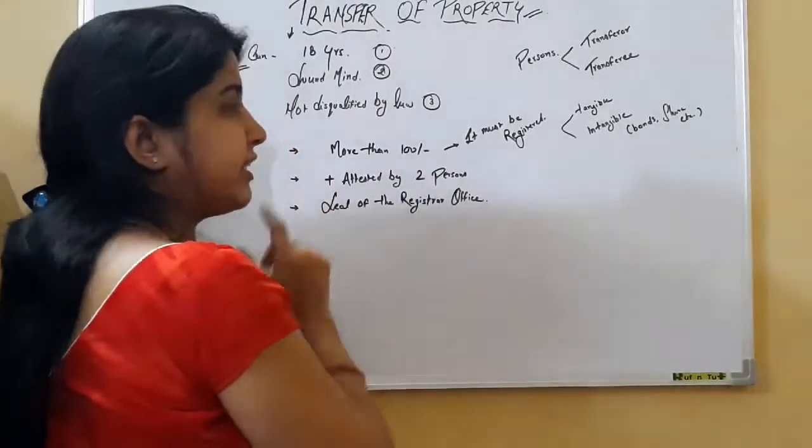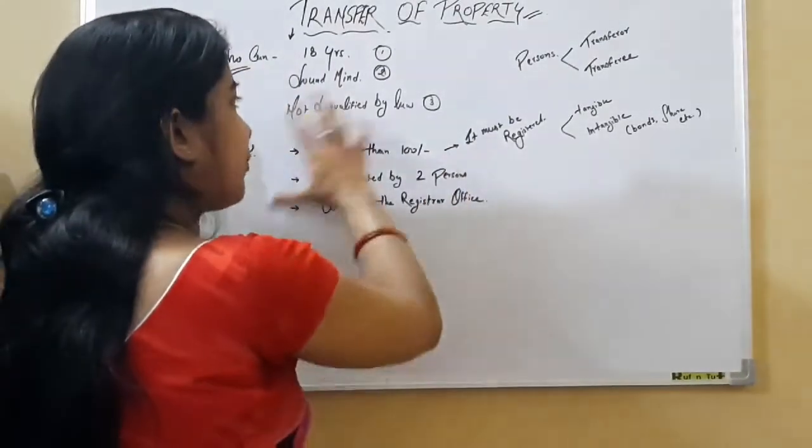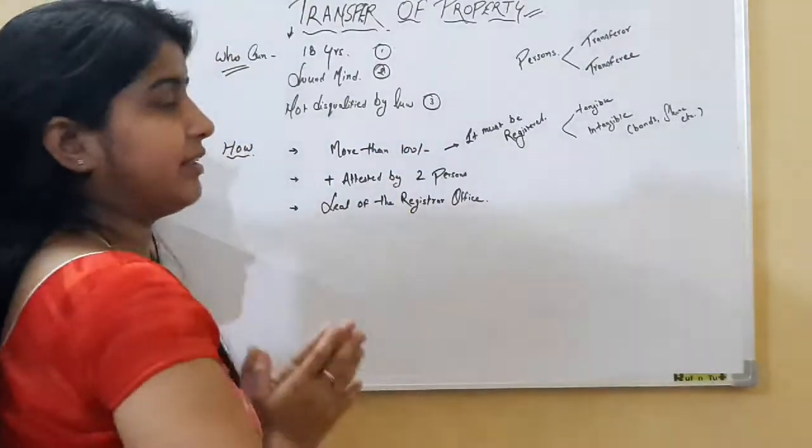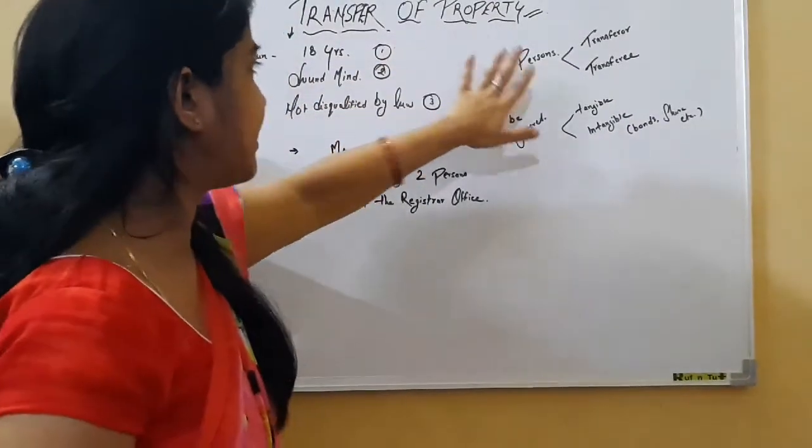Lastly, it must have the seal of the registrar officer. The registrar officer will put the seal, then that property becomes a valid transfer.